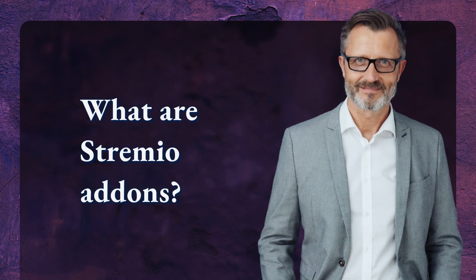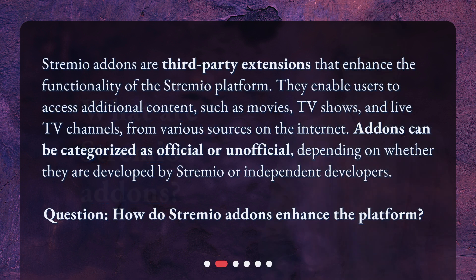Streamio add-ons are third-party extensions that enhance the functionality of the Streamio platform. They enable users to access additional content, such as movies, TV shows, and live TV channels, from various sources on the internet. Add-ons can be categorized as official or unofficial, depending on whether they are developed by Streamio or independent developers.